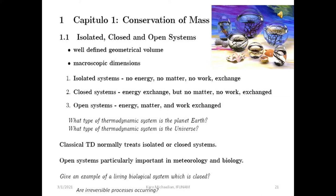We begin with Chapter 1 of Prigogine's book, which is titled Conservation of Mass. We will be considering the conservation of mass in three different types of thermodynamic systems: isolated, closed, and open systems.